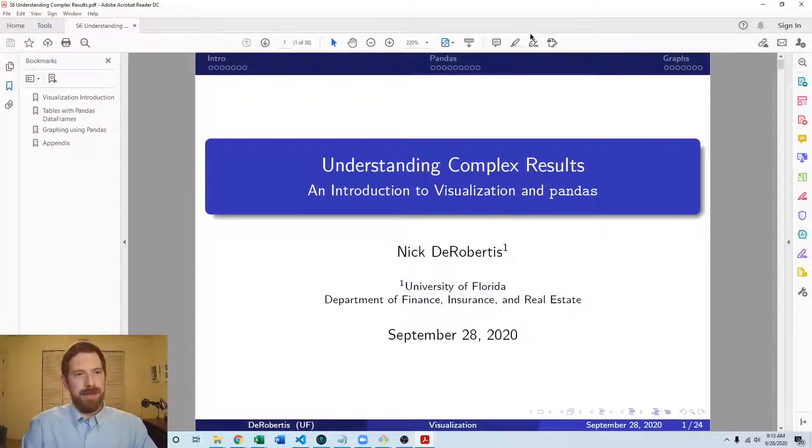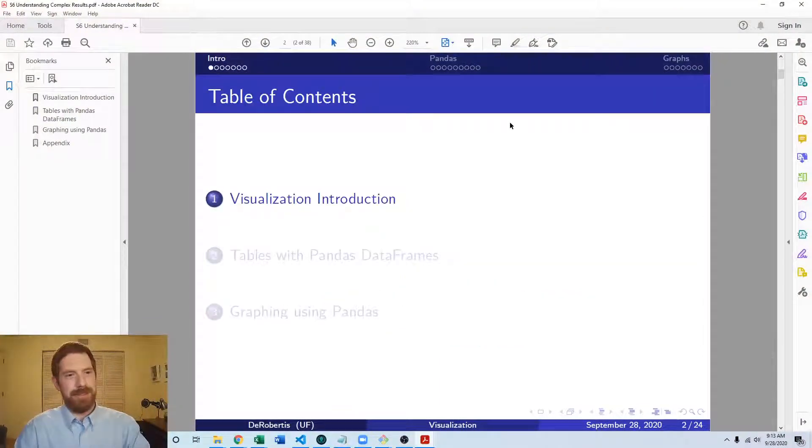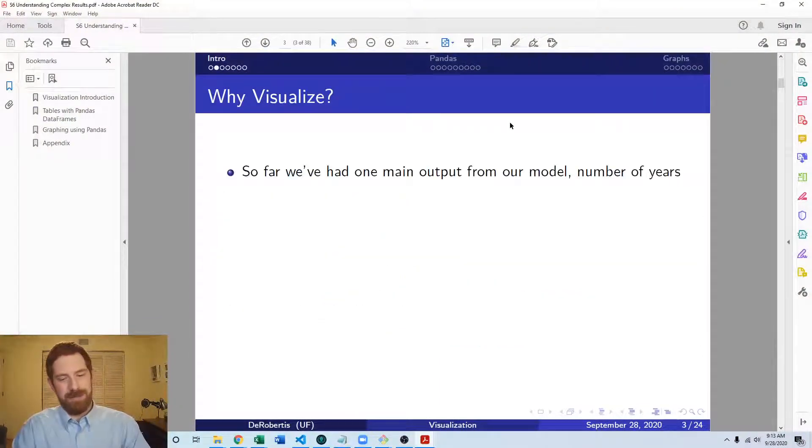When we think about visualization, it's a way of getting understanding of more than one number at once. In our models so far we've just had one main output. Thinking about the salary model, the dynamic salary retirement model that we've built out, we've had the number of years to retirement as our main output from the model.